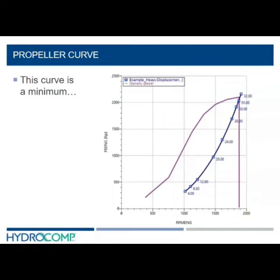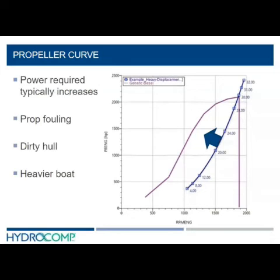We need to note that this curve represents a minimum power requirement. We were trialing each speed at a steady state, so the required power will only increase from this curve and for many reasons.